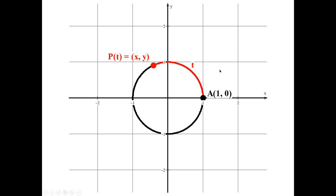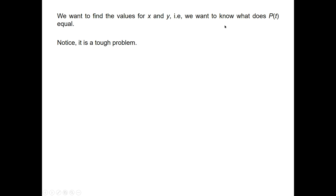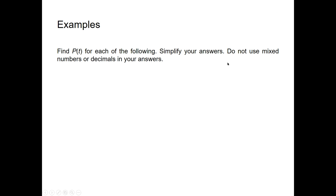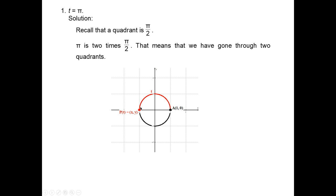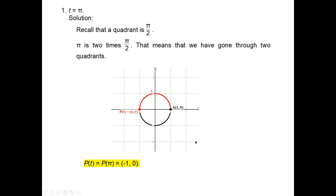Find P(t) for each of the following. For t = π: a quadrant is π/2, and π is 2 times π/2, so we've gone through two quadrants. Going π/2 then 2π/2 (which is π), we end up on the x-axis at negative 1, 0. So P(π) = (−1, 0). For t = −3π/2: going clockwise through three quadrants gives −π/2, −2π/2, −3π/2, landing at the point (0, 1). So P(−3π/2) = (0, 1).